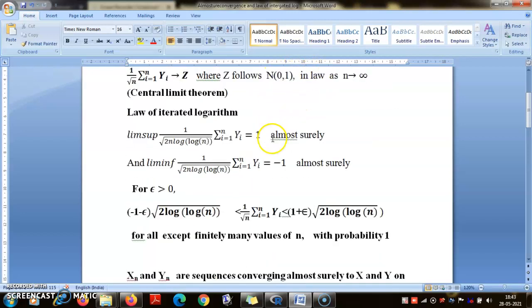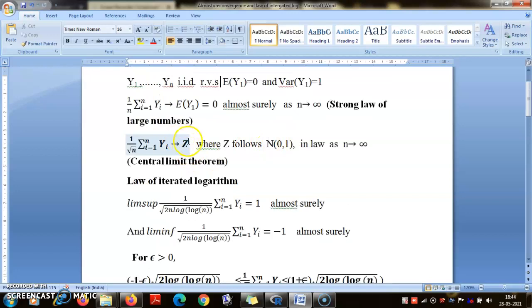The convergence in law means that for large n, this random variable (1/√n) Σ Yi has a probability distribution similar to normal distribution. Although the normal distribution is supported on the entire real line, essentially all the values are between -3 and +3—99.73% of values are between -3 and +3—so essentially it behaves like a bounded random variable, but it's not.